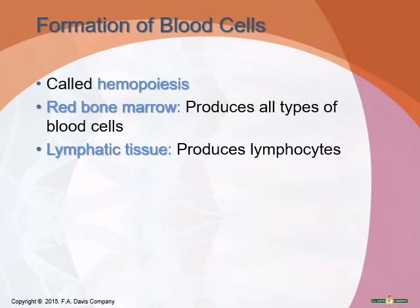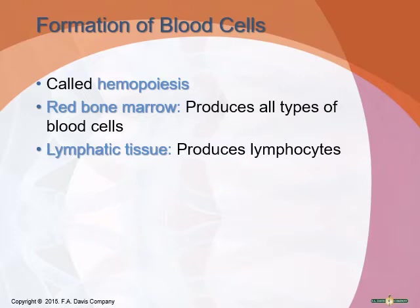Our body is continually replacing all of our red and white blood cells in a process called hemopoiesis. This happens in two places: the red bone marrow, which produces all types, and the lymphatic tissue, which only produces lymphocytes. In the adult body, red bone marrow is found in the ends of long bones, the sternum, pelvis, cranial bones, and vertebrae. Lymphatic tissue is found in the spleen, lymph nodes, and thymus gland.